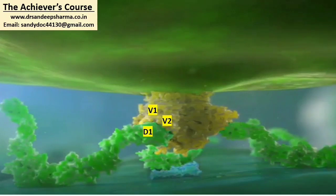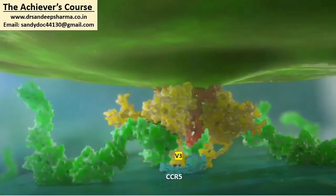As a first step, the D1 domain of the CD4 receptor interacts and binds with the V1 and V2 part of the glycoprotein 120 molecule. This initial binding produces structural changes in the glycoprotein 120 molecule. The previously hidden part known as V3 now comes out and interacts with the CCR5 receptor.